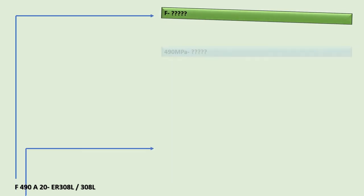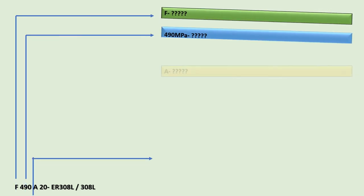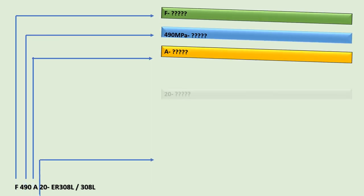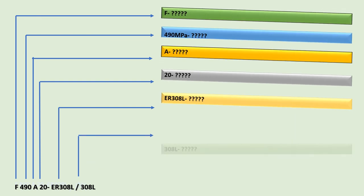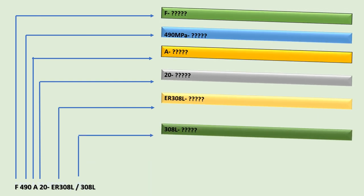We have reached the end of this video. Now, whenever you see a designator for a submerged arc welding flux electrode, you will be able to decipher it, and each alphabetic and numeric component of the flux electrode classification will make sense to you.